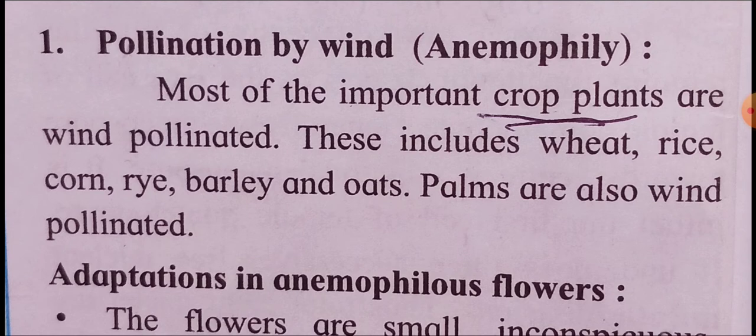Most of our crop plants — those used in agriculture — are mostly wind-pollinated. This includes wheat, rice, corn (makka), rye, mustard (mohari), barley, oats. Palms are also wind-pollinated. These are some examples where wind carries out pollination.